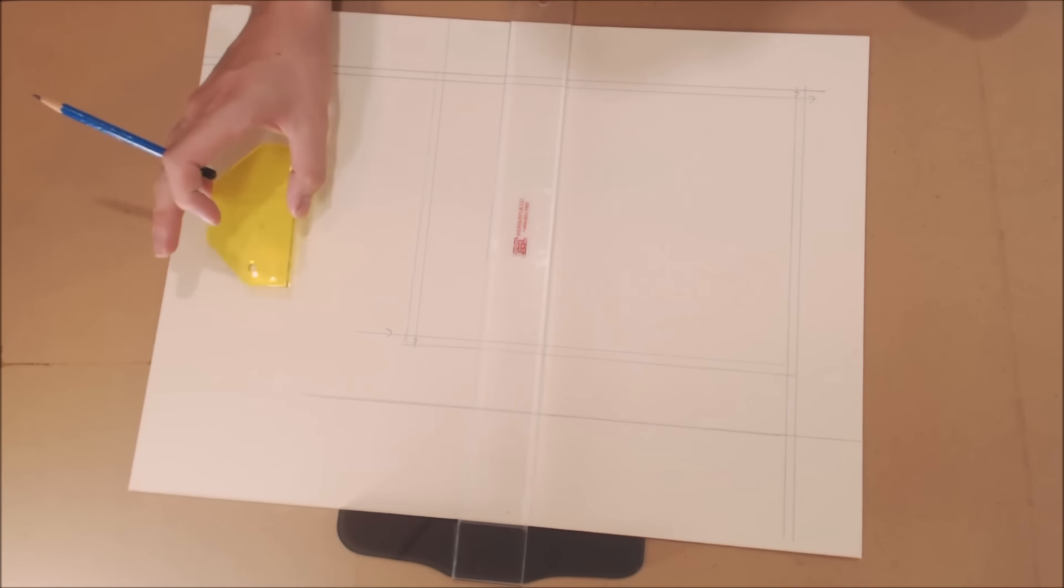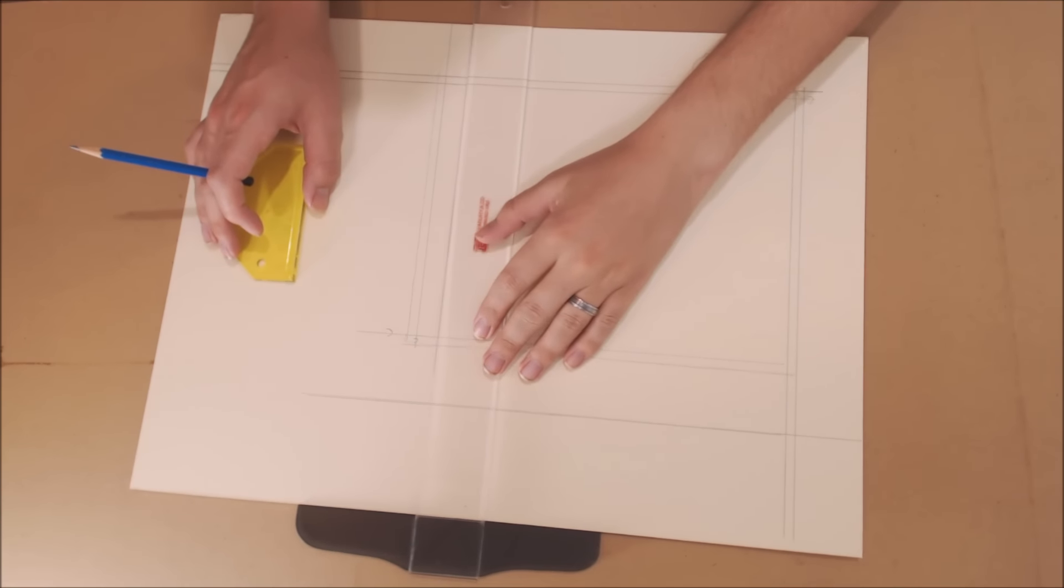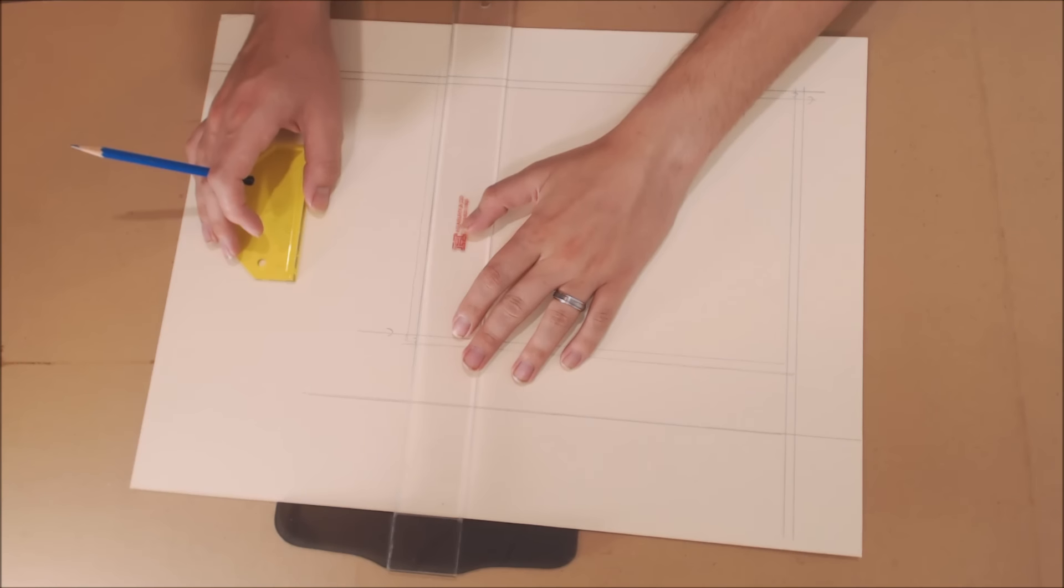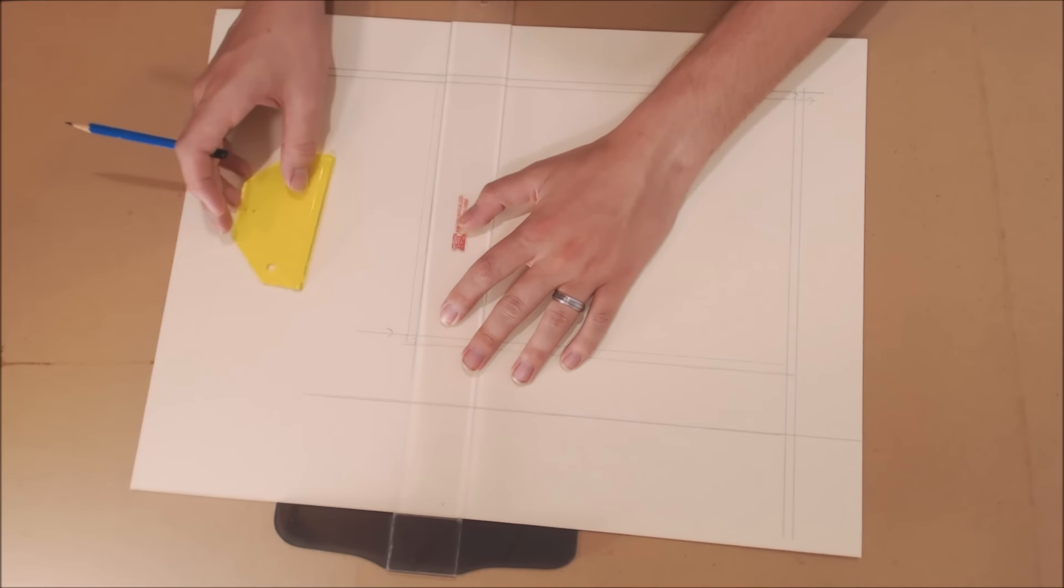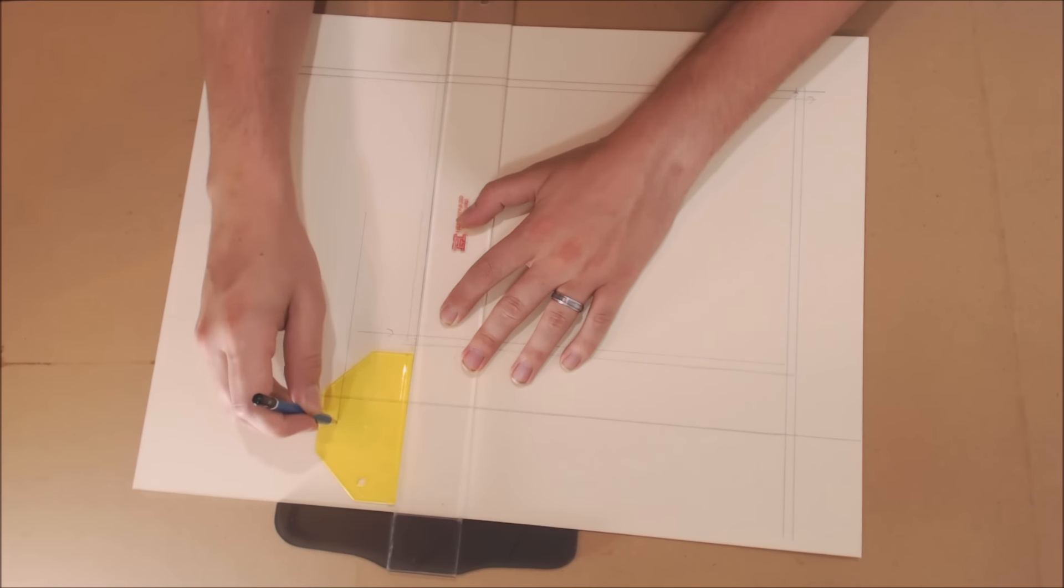Using the T-square and the tool face down, we're going to slide our T-square up to our inside cut line, slide our tool against it and using hole D we're going to draw a line all the way across.